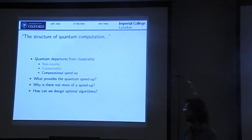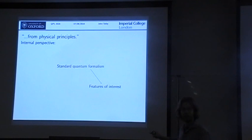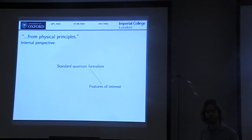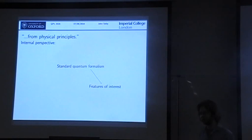Why would we want to study this from physical principles rather than in a more neutral way? The usual approach is to start with the standard quantum formalism, with Hilbert spaces and unitary operators, and from this try and derive some features of interest — some bounds on computation or some tasks that you can do. But if you want to say what's really the physics behind this, you've got a big mess in the standard formalism between the mathematical tools and the different elements of physics that all sort of tie together, and it's very hard to extract what's really physical.